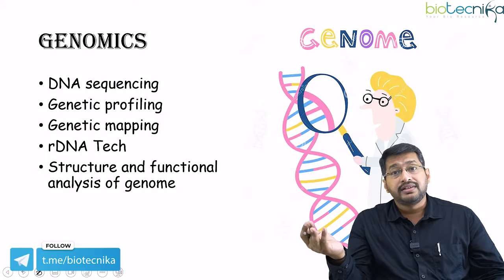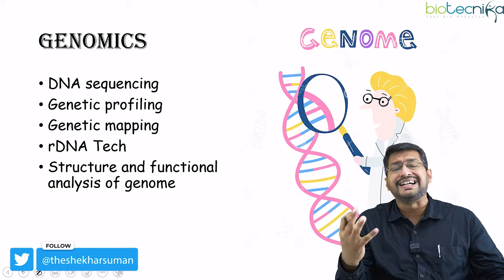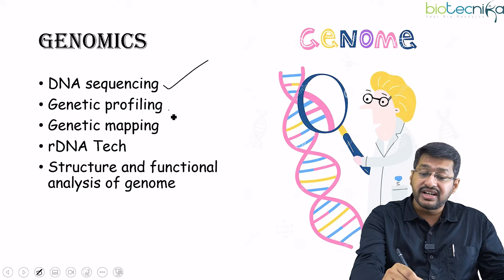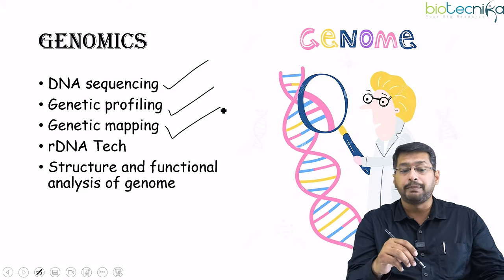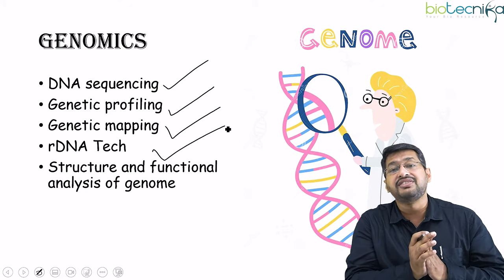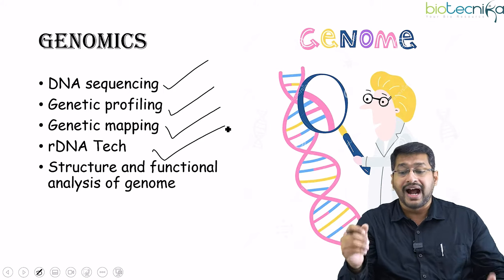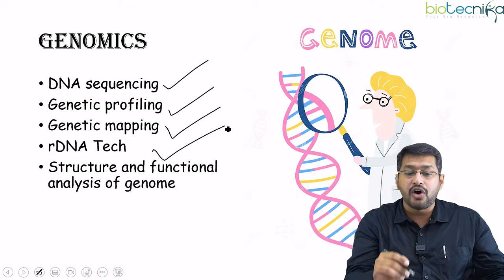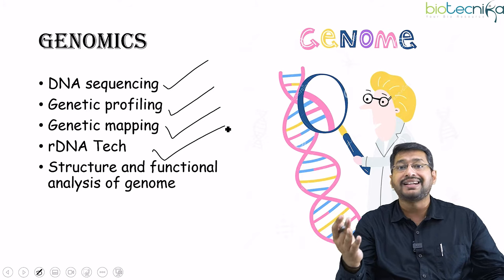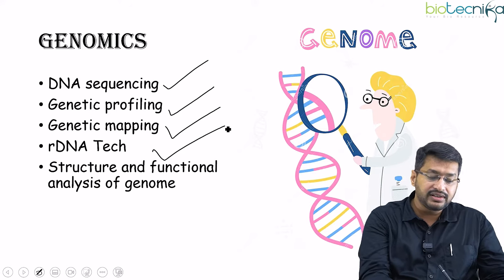What do we study in genomics? Genomics is the major field for studying DNA through DNA sequencing, genetic profiling, mapping genetic components, DNA technology, and understanding the structural and functional analysis of the genome. The genome is the entire complete set of genes of an organism. Depending on the organism, we have human genomics, plant genomics, or bacterial genomics.